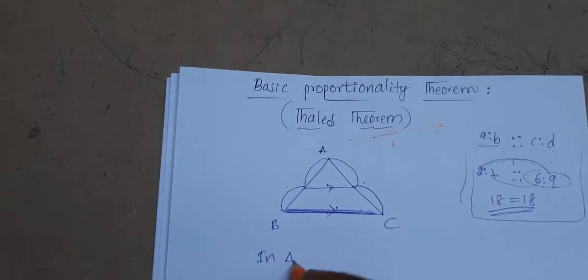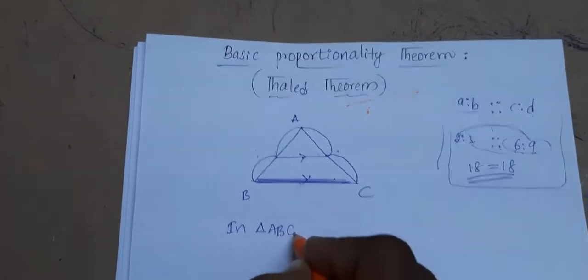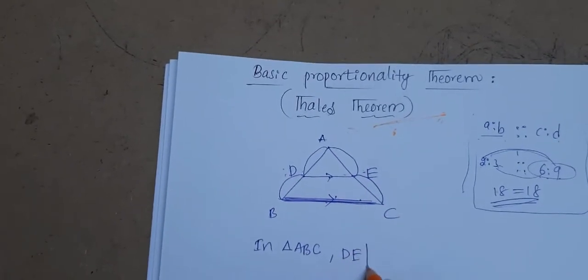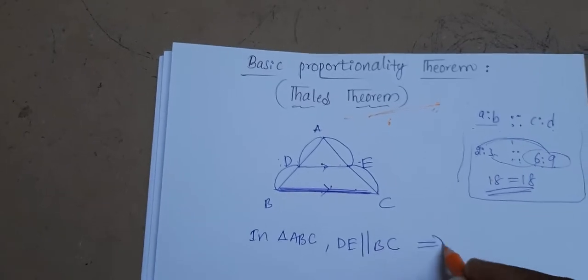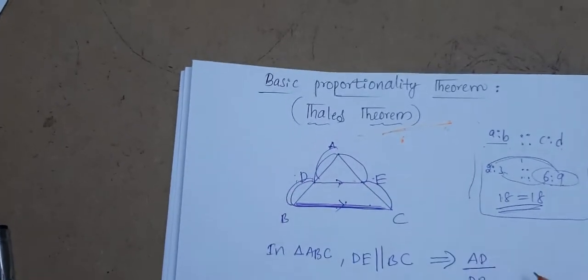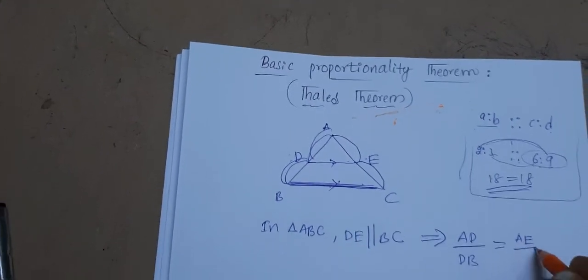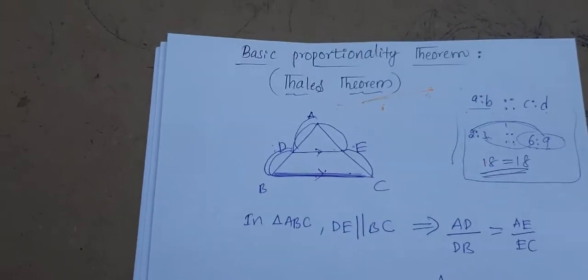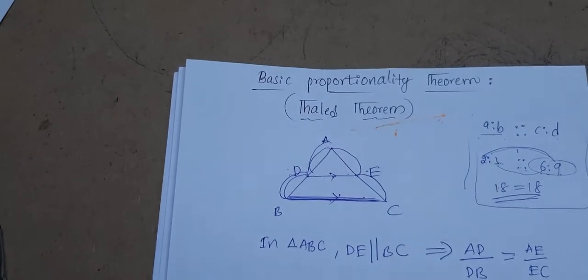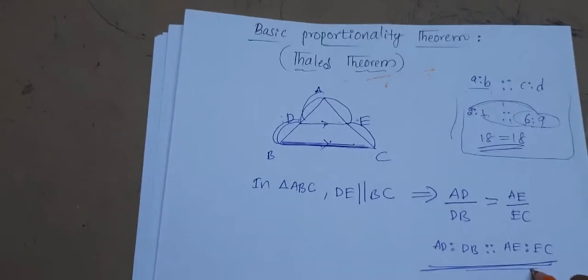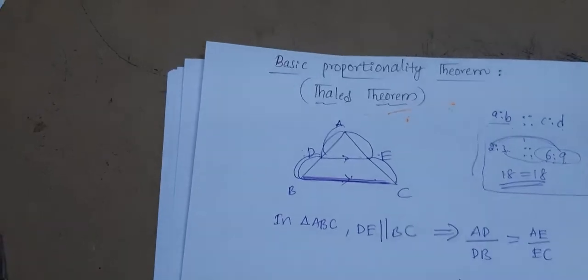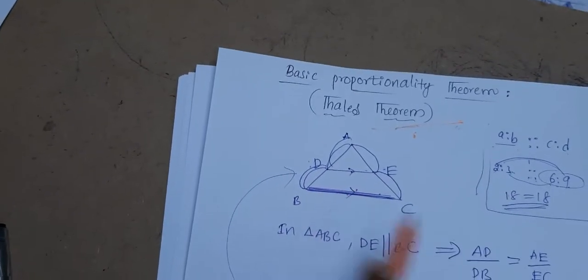We can write it easily. In triangle ABC, if DE is parallel to BC, then AD/DB equals AE/EC. That means AD is to DB as AE is to EC — proportional. We got a proportion from this triangle. That's what this basic proportionality theorem states.